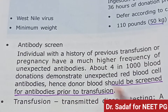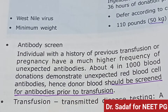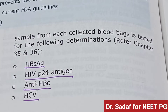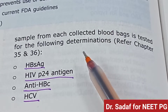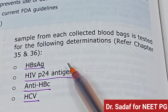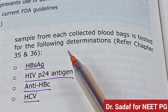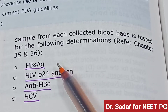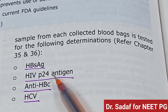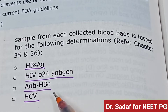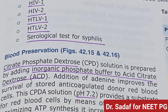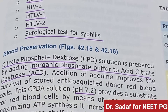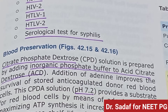Transfusion-transmitted disease testing: a sample from each collected bag is tested for HBsAg, HIV p24 antigen, anti-HBc, HCV, HIV-1, HIV-2, HTLV-1, HTLV-2, and serological testing for syphilis.